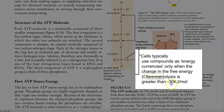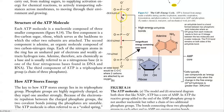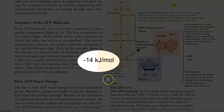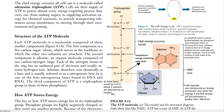Cells typically use compounds as energy currencies only when the change in free energy of hydrolysis is greater than 30 kilojoules per mole. When these two anhydride bonds are hydrolyzed, a significant amount of energy is derived and can be used for other processes — that is why they are called high-energy anhydride bonds. The last phosphate, however, is bonded by an ester bond containing insignificant energy, and when hydrolyzed it releases very little energy, not significant enough to act as an energy currency. Thus the energy released during hydrolysis of ATP to ADP is a significant quantity, whereas hydrolysis of the third bond releases only meager energy.